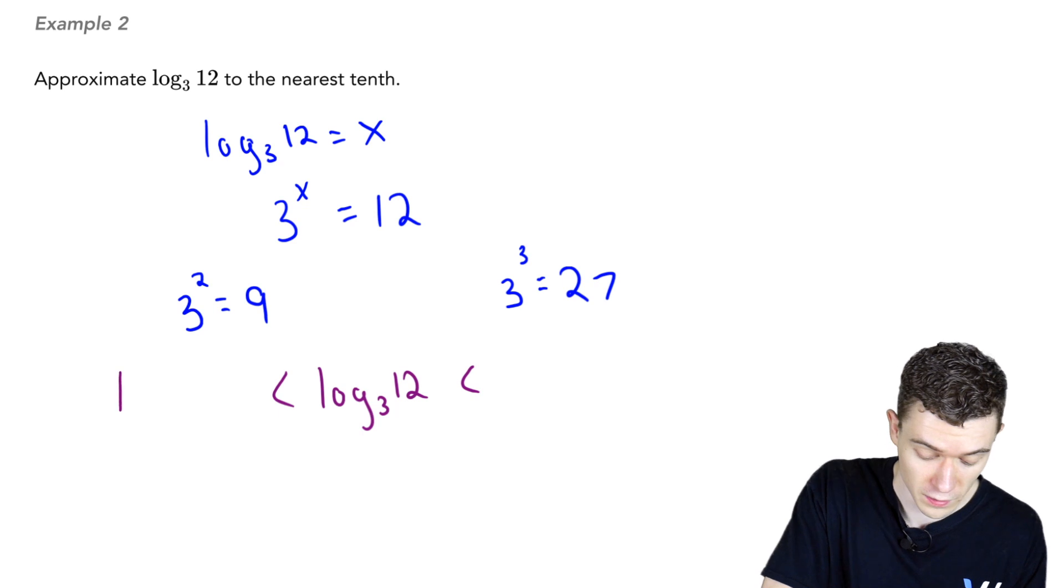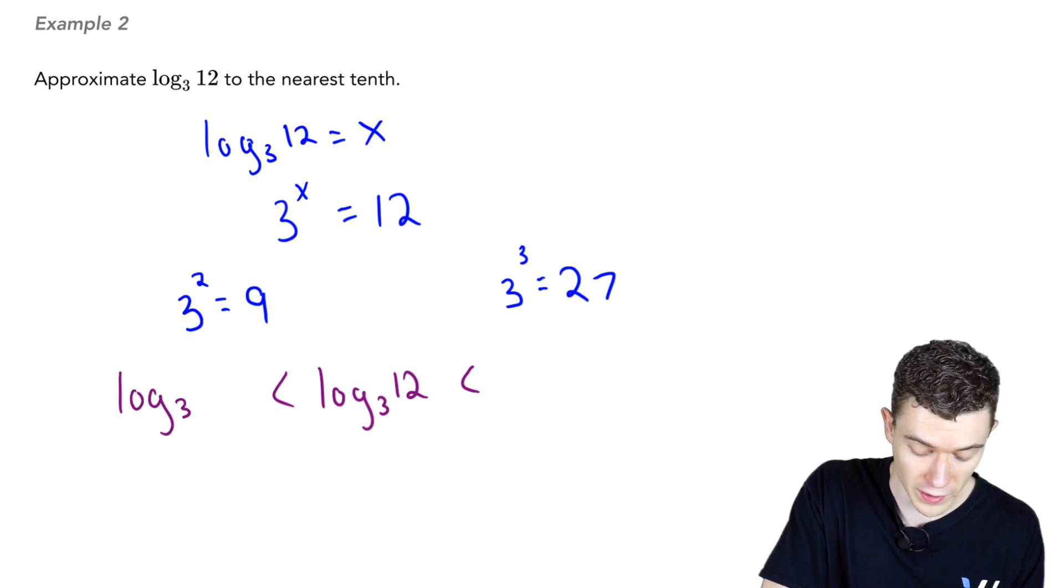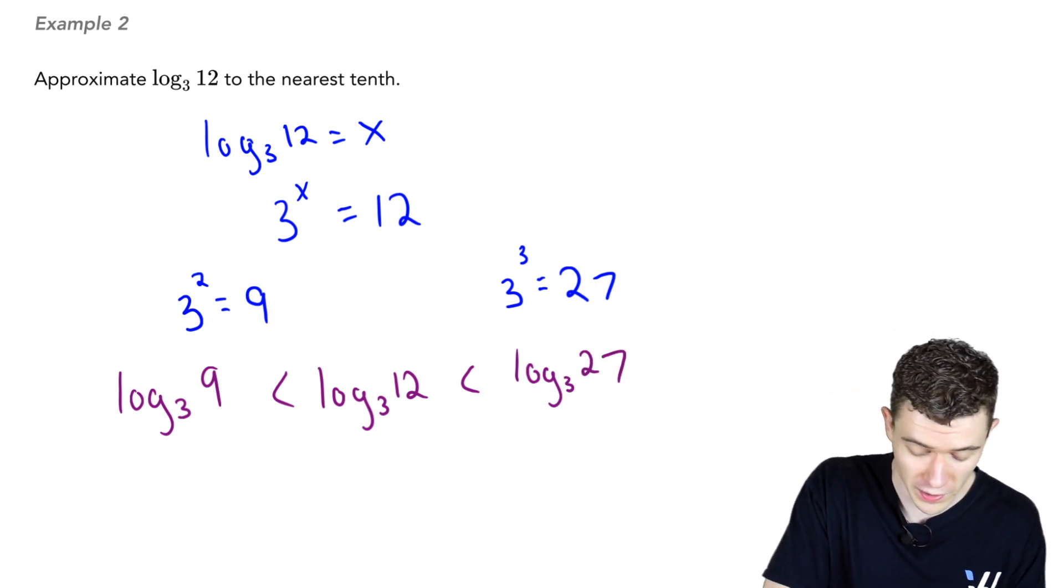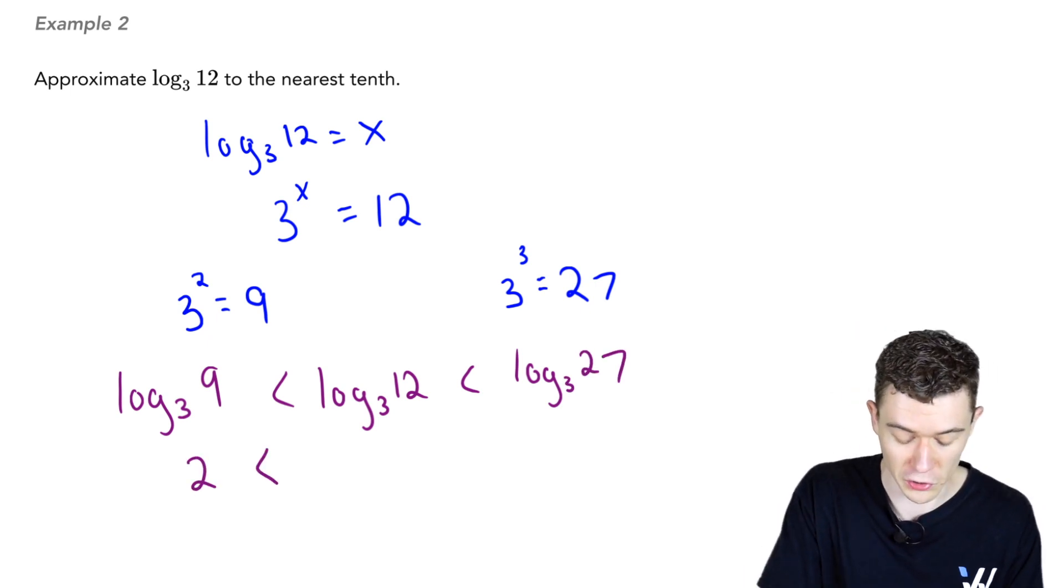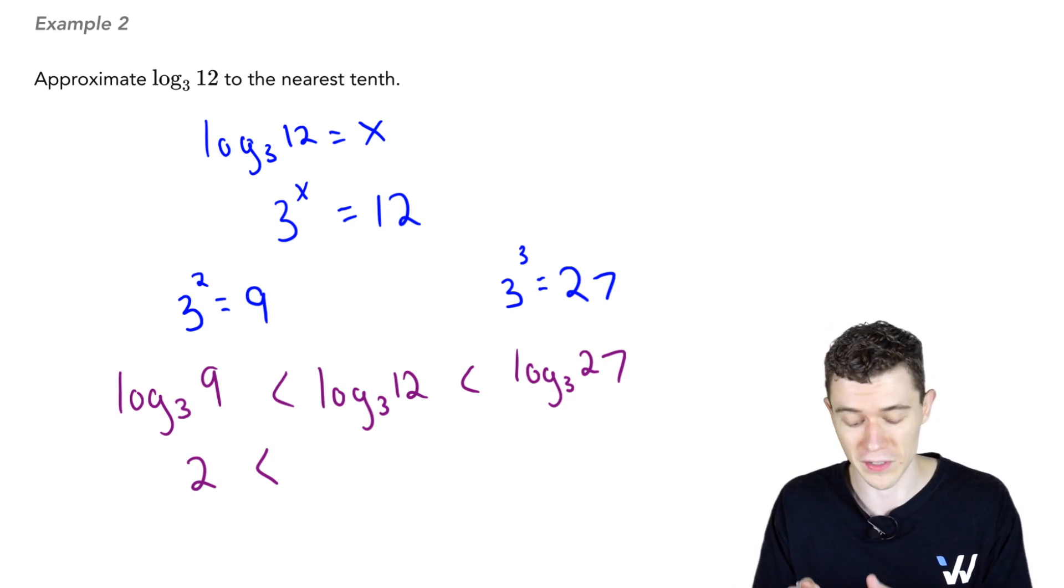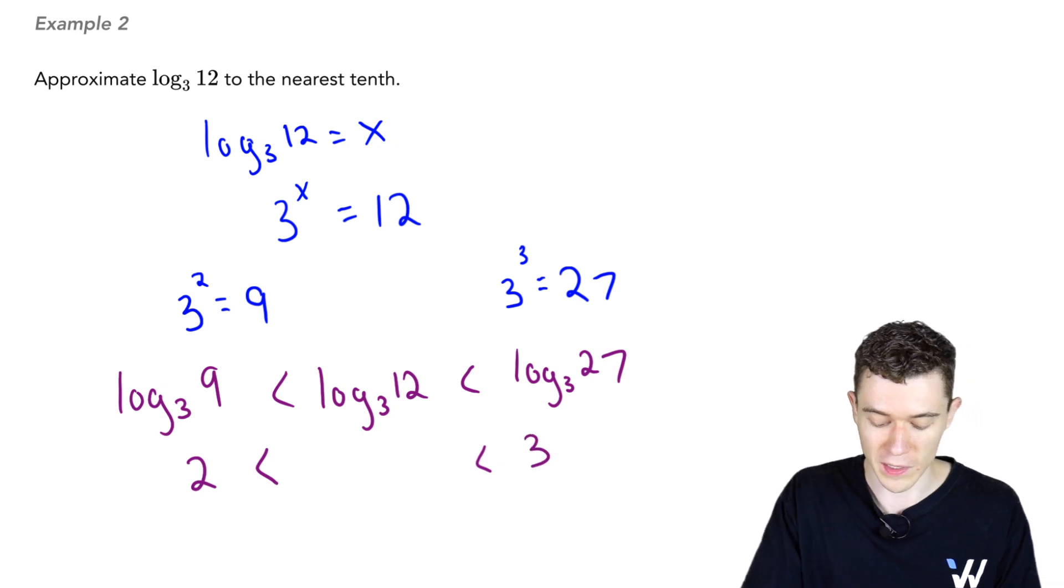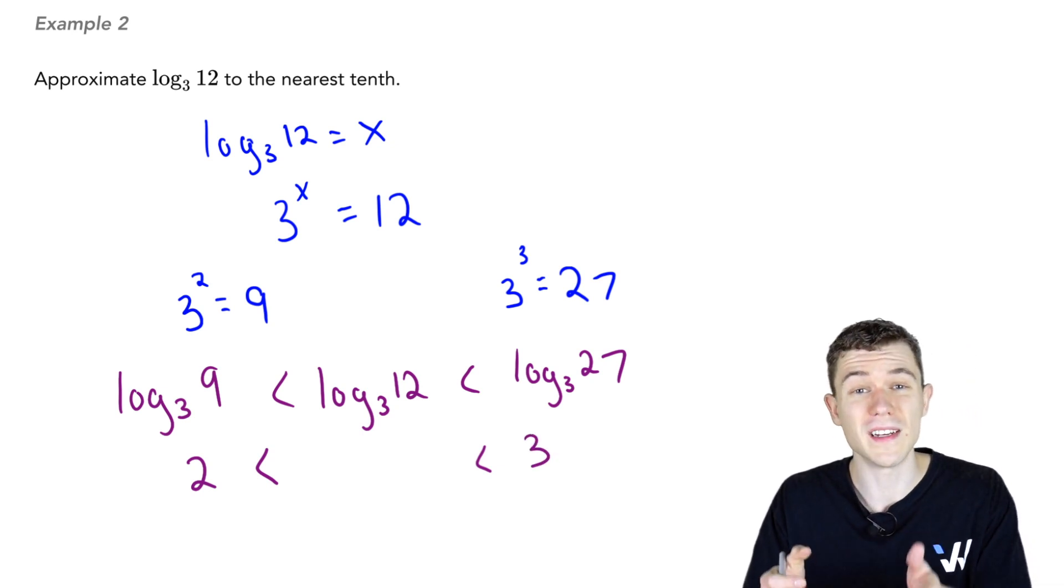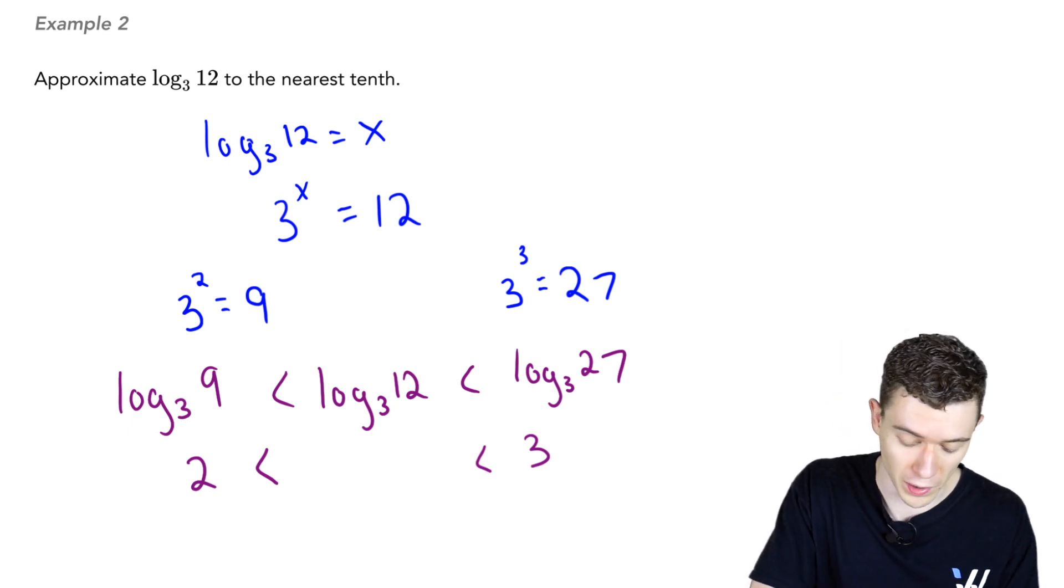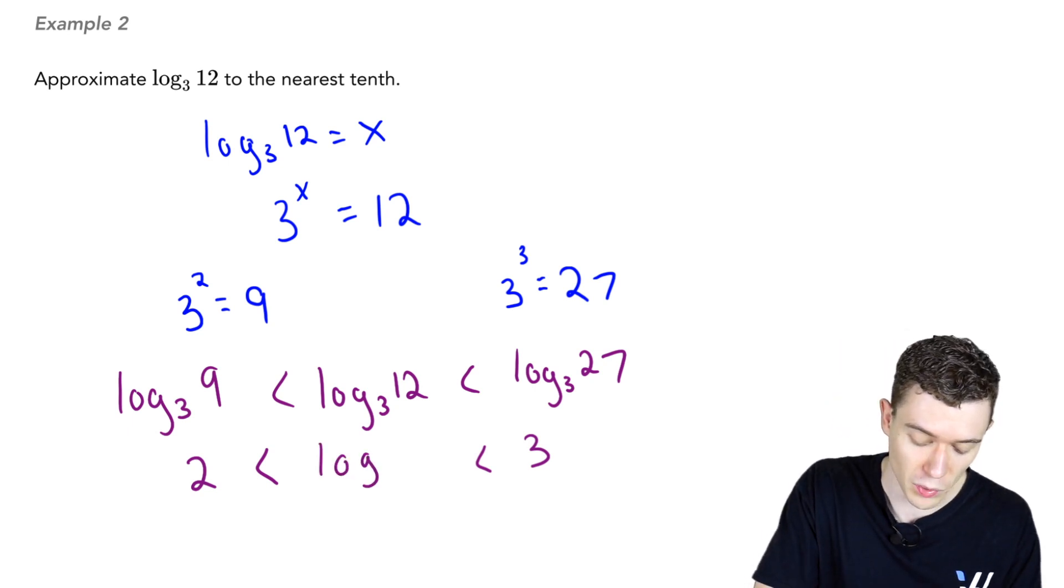In other words, log base 3 of 9 and log base 3 of 27. Since we just agreed that this left-hand side should be 2, that's because 3 squared is 9, log base 3 of 9 must be 2. On the right here, this has to be 3. Log base 3 of 27 is 3, that's because 3 cubed is 27. And what we're interested in lives in between.